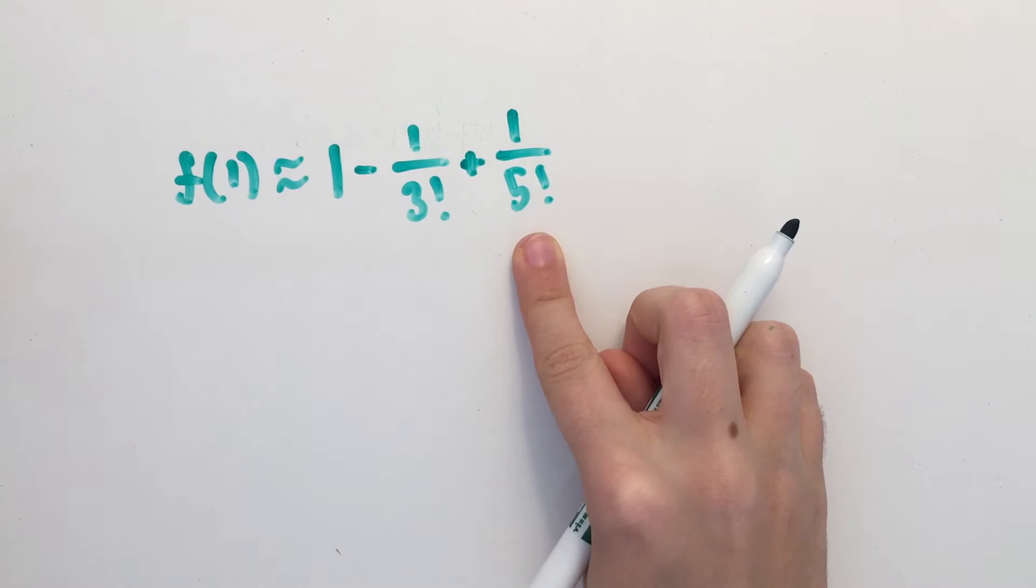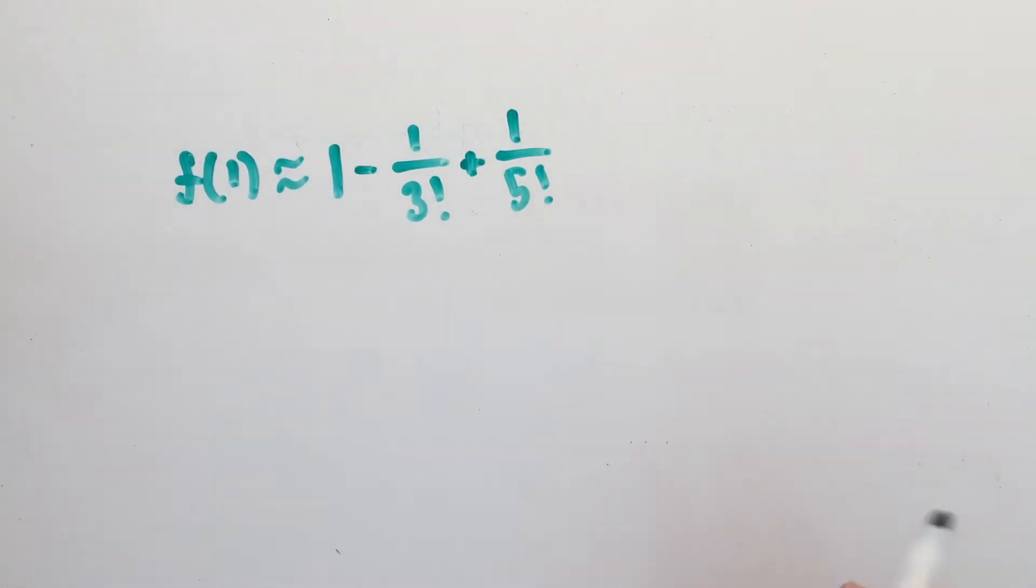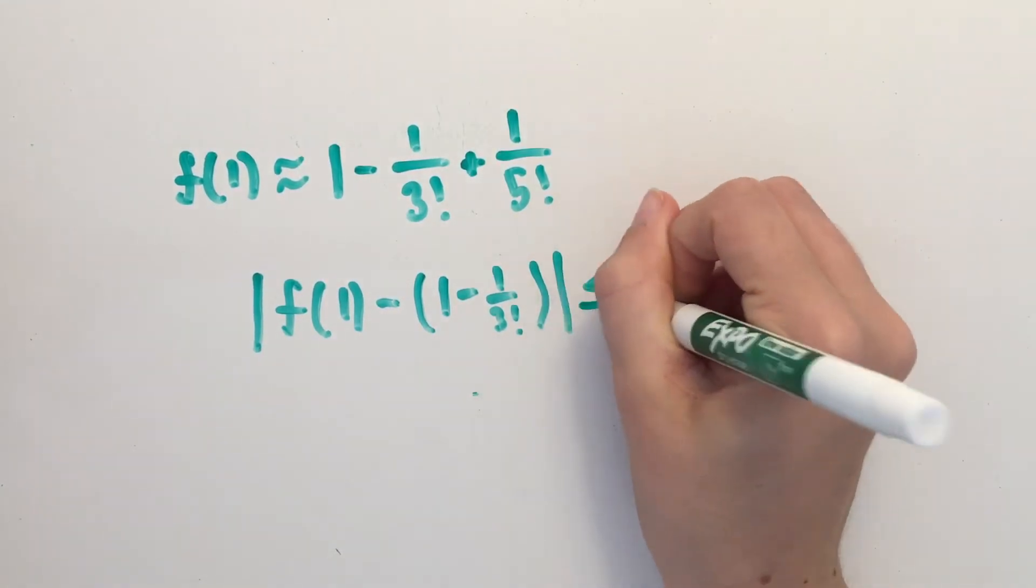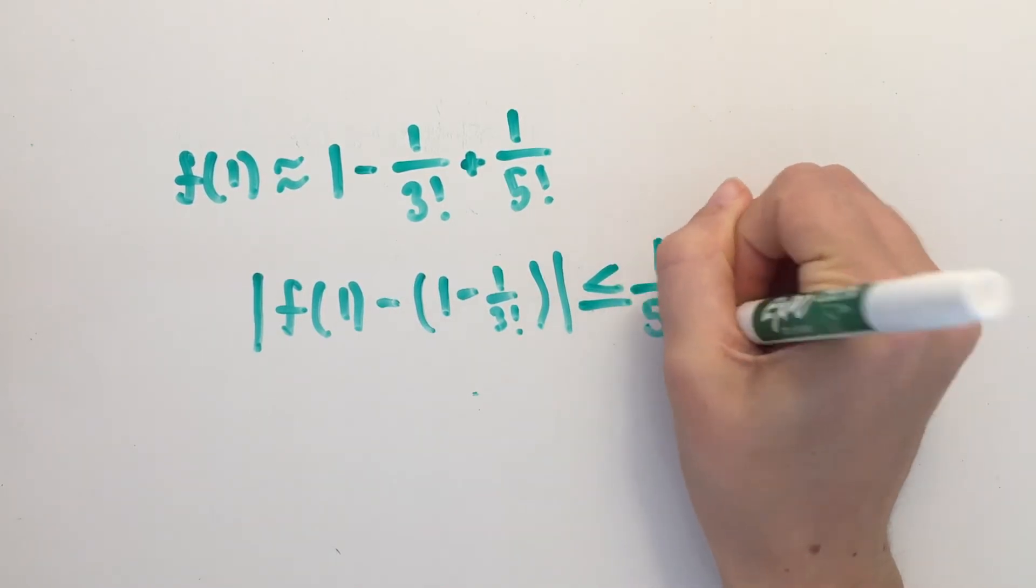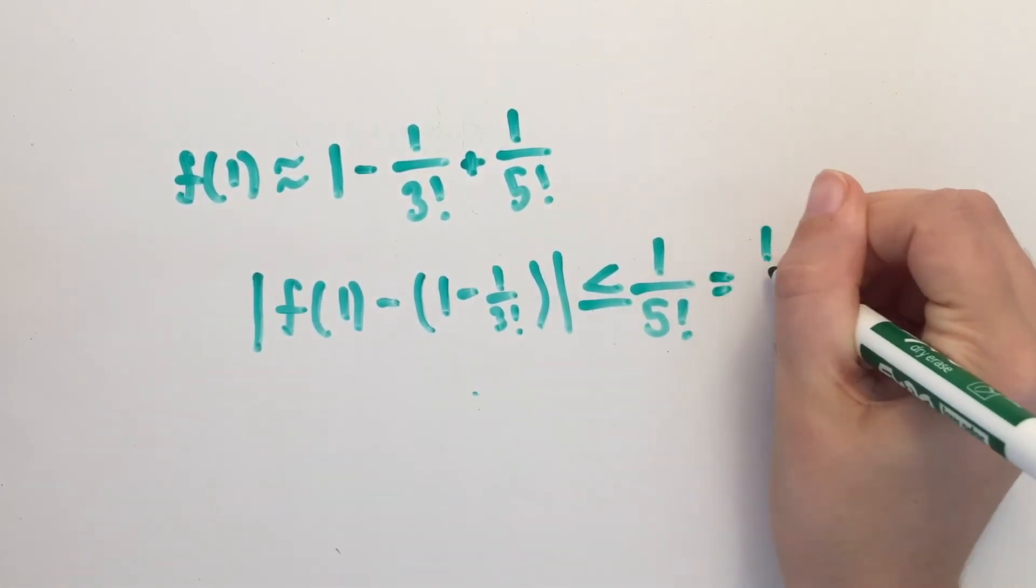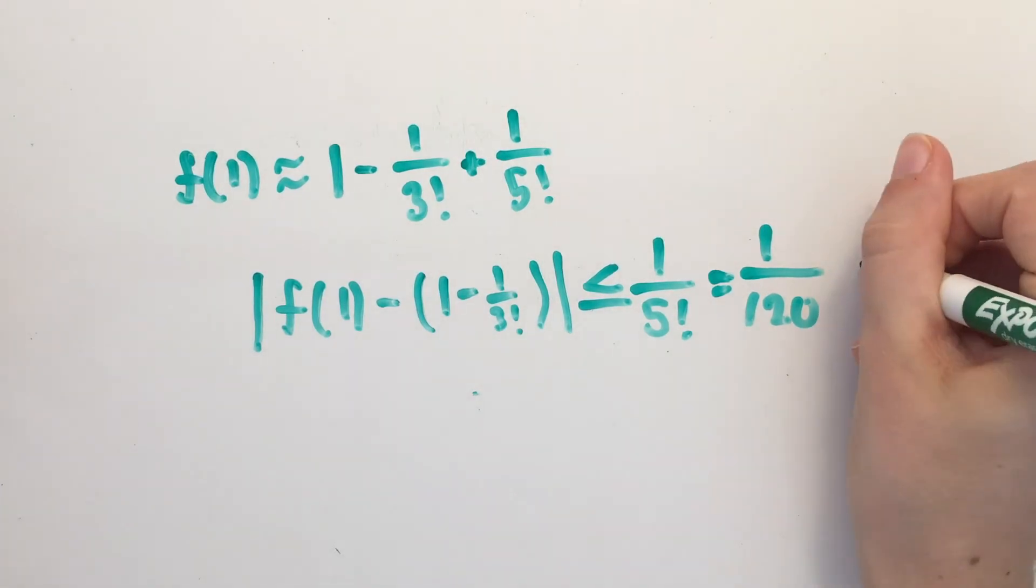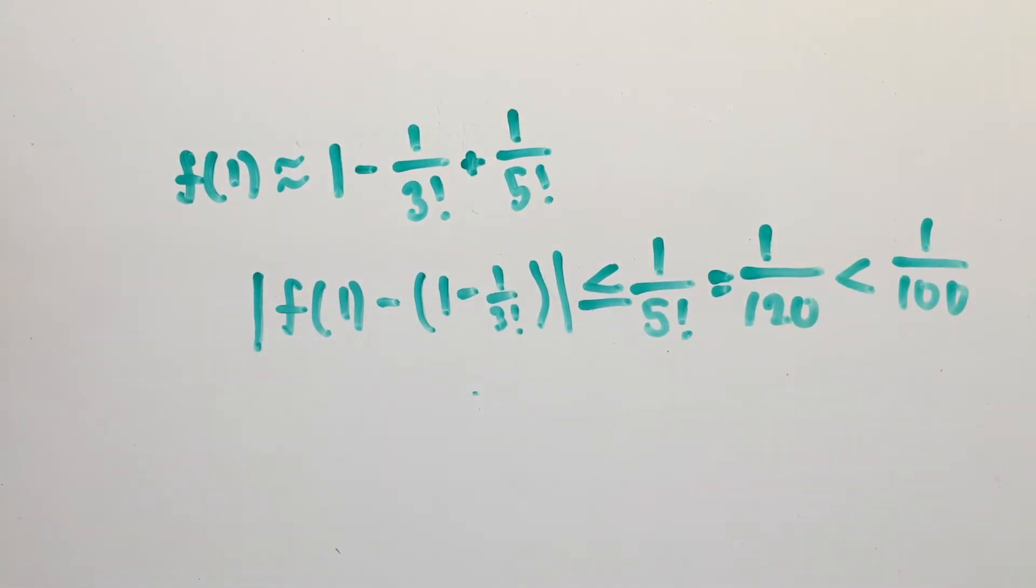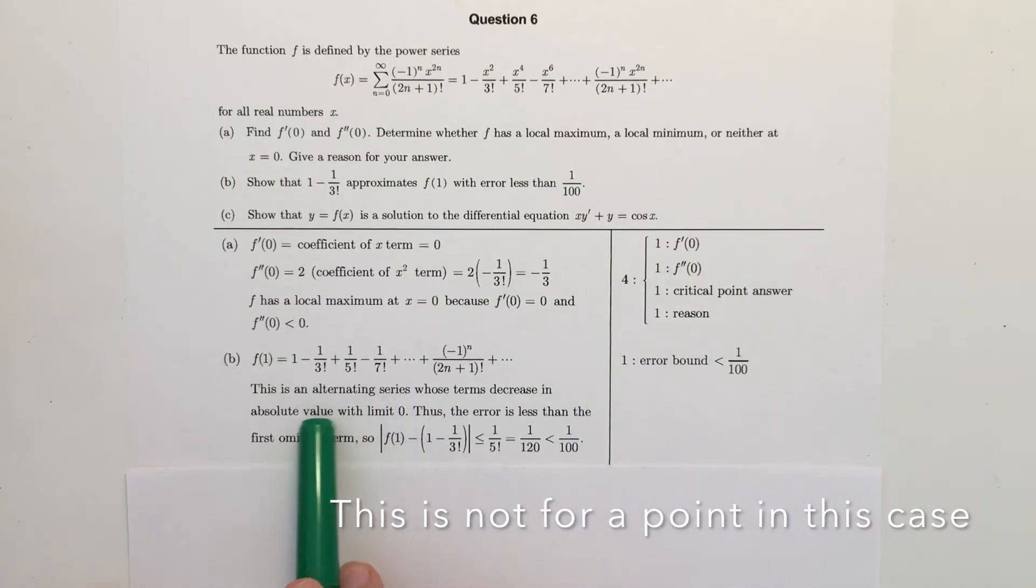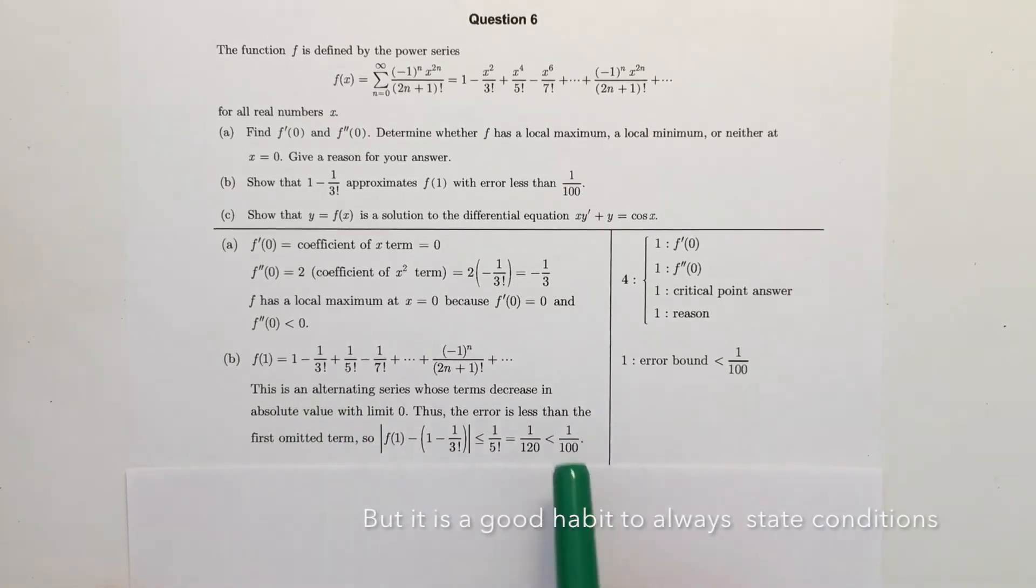Now, using this term, you can determine if the error is less than 1 over 100. To do this, you recognize that the error has to be less than or equal to the next term in the series. Then you find what this is equal to. And now you know that 1 over 120 is less than 1 over 100. Therefore, the error has to be less than 1 over 100. Don't forget to state that this is an alternating series. And to do this, you must also state that it is decreasing and has an absolute value limit as n approaches infinity equal to 0. These are the properties that ensure it is an alternating series.